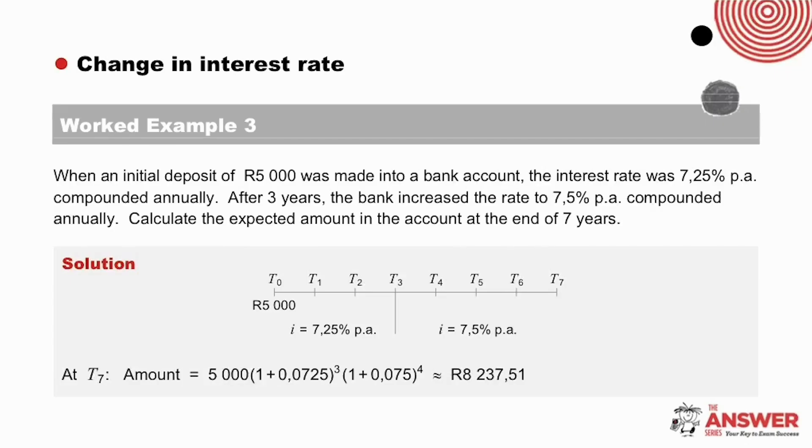Now let's have a look at what we do when there is a change in interest rate during a time period. This time, the story is that R5000 was deposited into a bank account. And then it is given that first of all, the interest rate was 7.25% per annum compounded annually. And then after three years, it changes to 7.5% per annum compounded annually. We've been asked to calculate the amount in the account at the end of seven years. First of all, let's show here that we are working in years. Then to show the change in interest rate on our timeline, we draw a long vertical line to indicate the change.